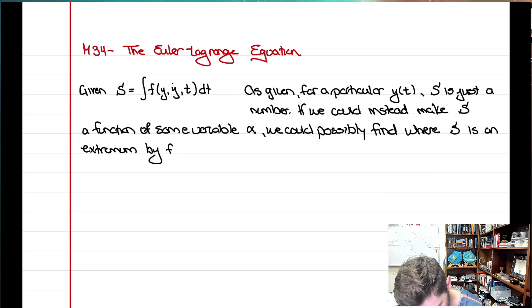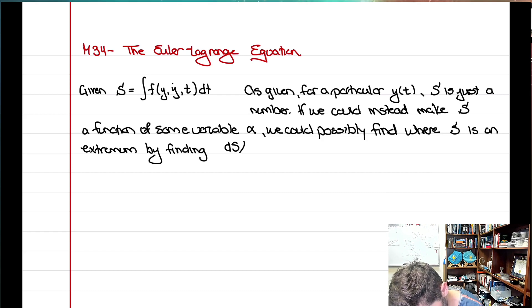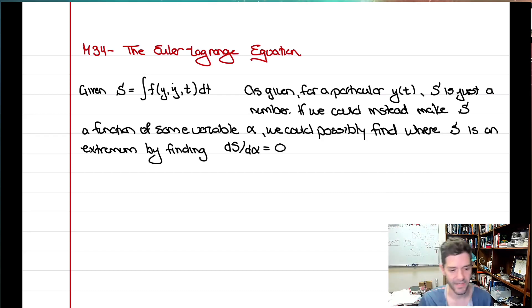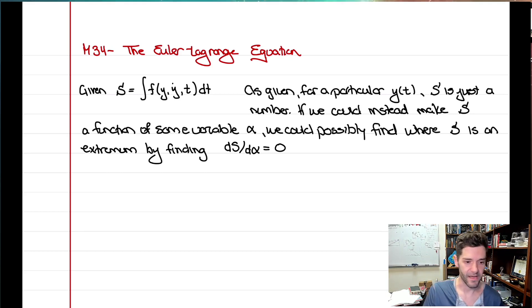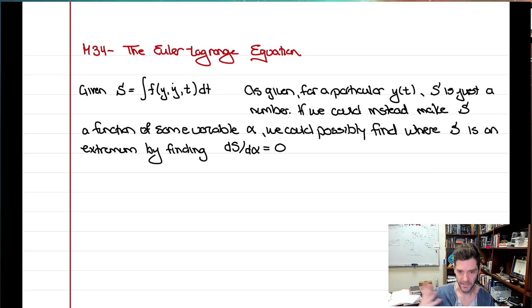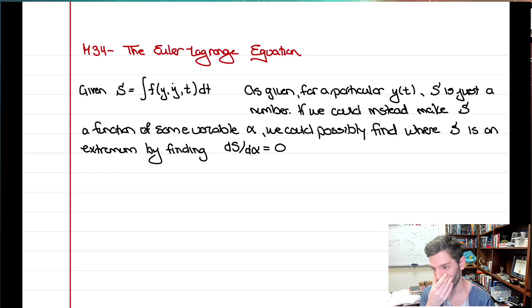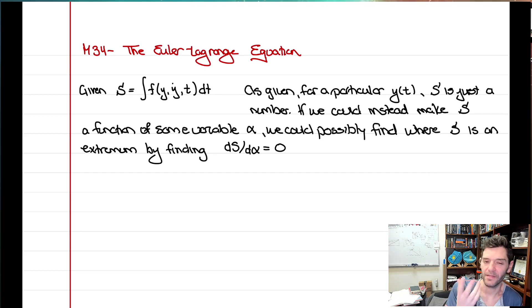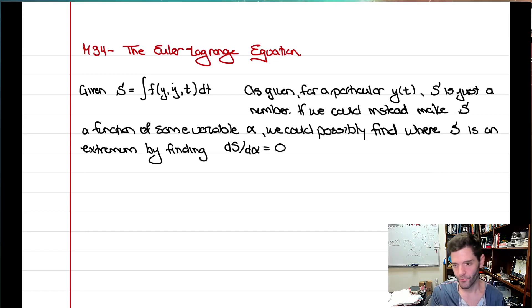If S is a function of alpha, and I want to find where it's a max or a min, I could find where dS/dα equals zero. That should give me a particular value of alpha which, in some sense, allows me to say something about that particular path — a function of time but also of alpha — and narrow in on the true path where S is optimized.